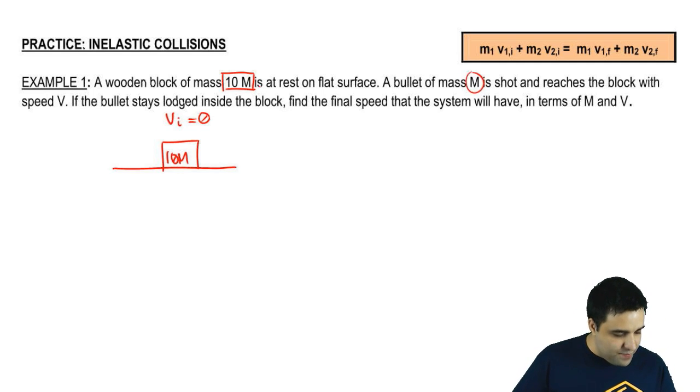A bullet of mass 1m, so instead of 10m it's 1m. So here's a bullet. It's got mass big M.